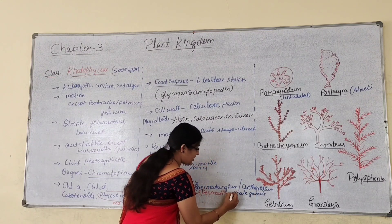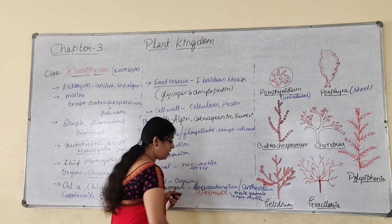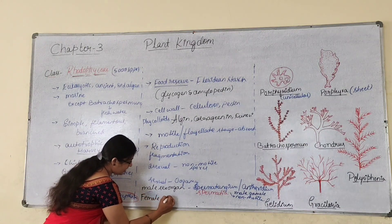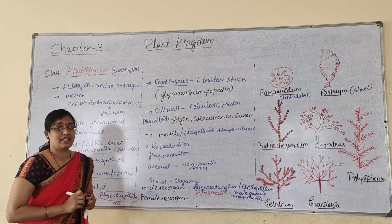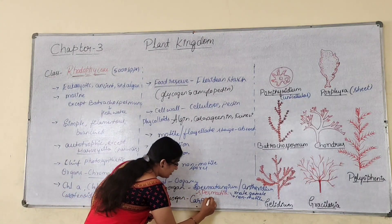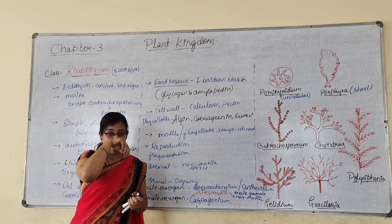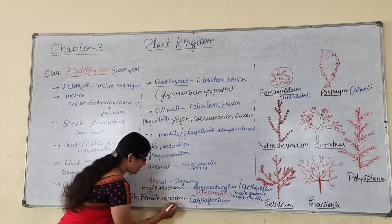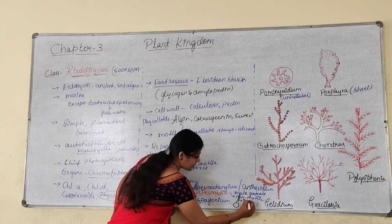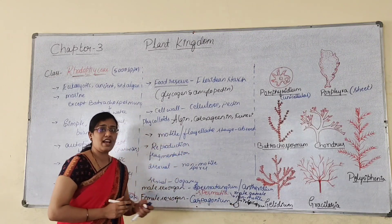Spermatia are the male gametes — they are non-motile male gametes. The female sex organ in case of red algae is called carpogonium. It is a flask-like structure, and it will be having an elongated receptive structure called the trichogyne.